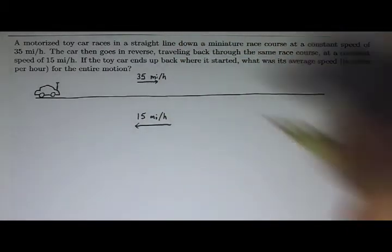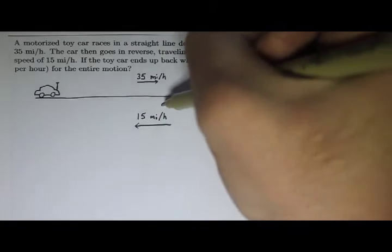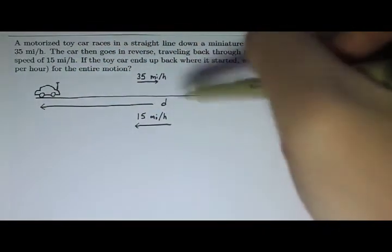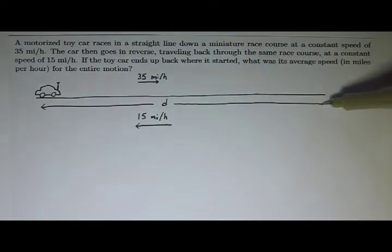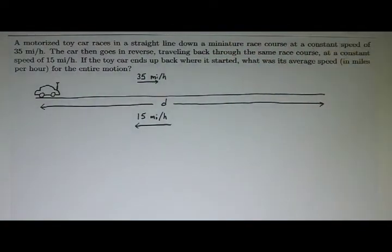And they don't give us a distance for the course, so let's just call it D. So we'll say the D is the distance all the way down and then you turn around or just went in reverse and went back that same distance D.